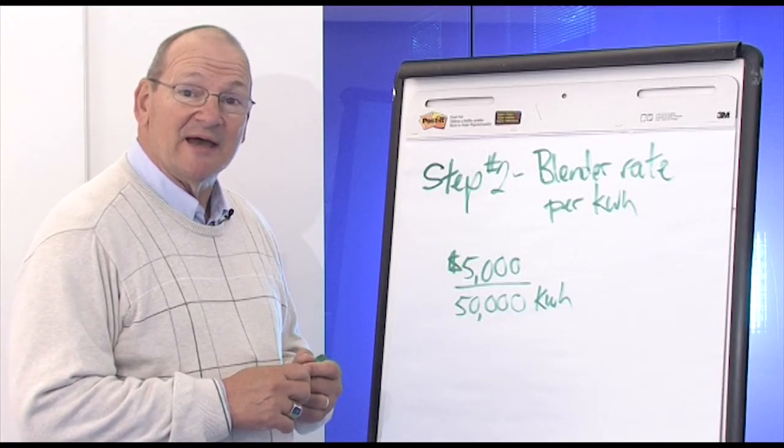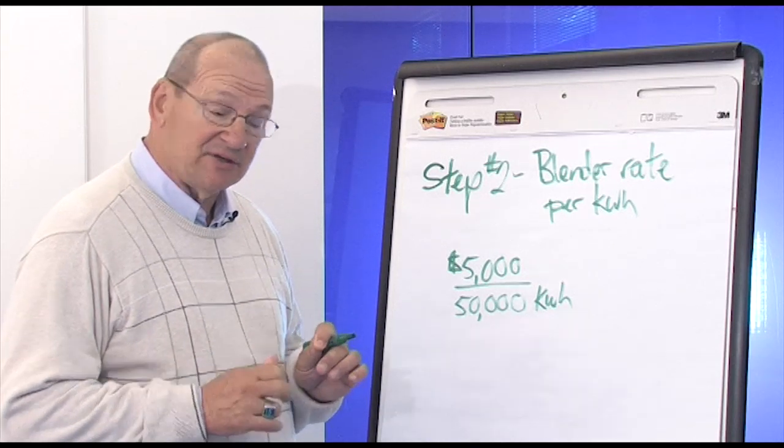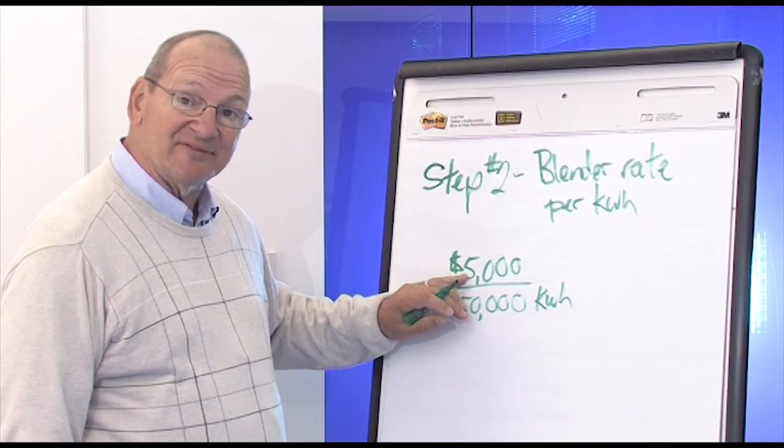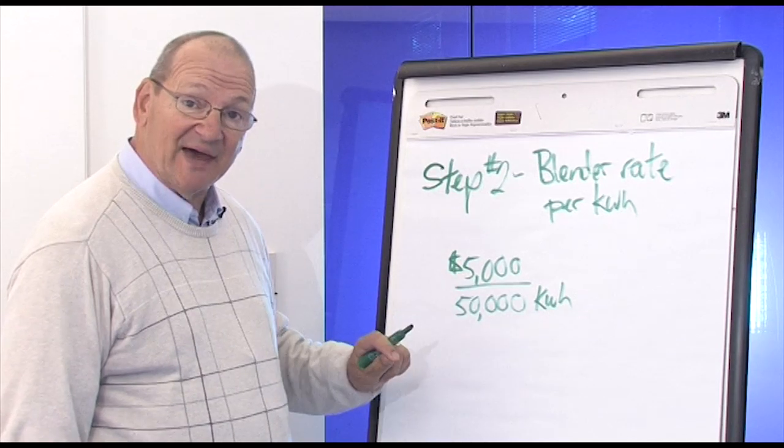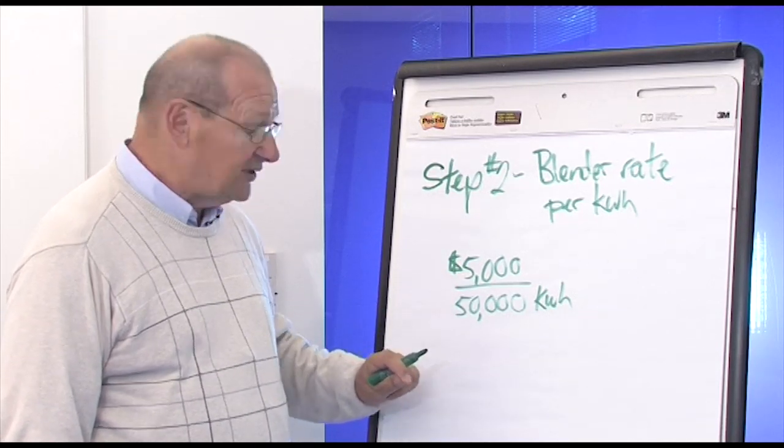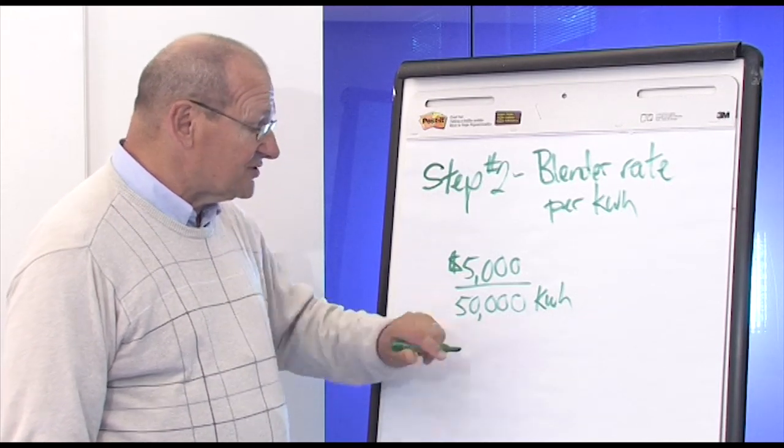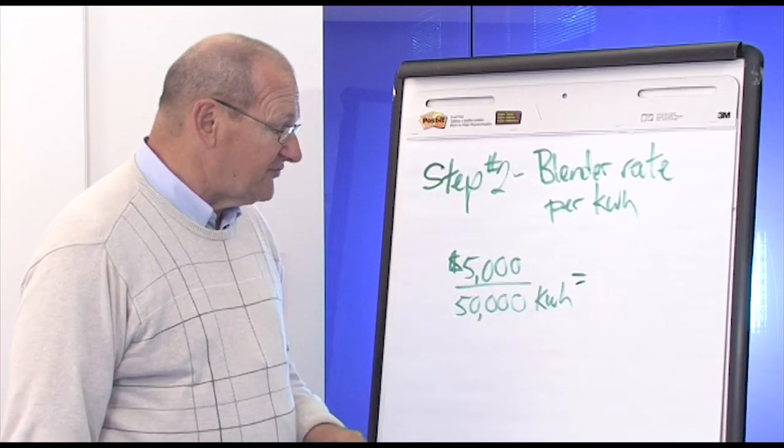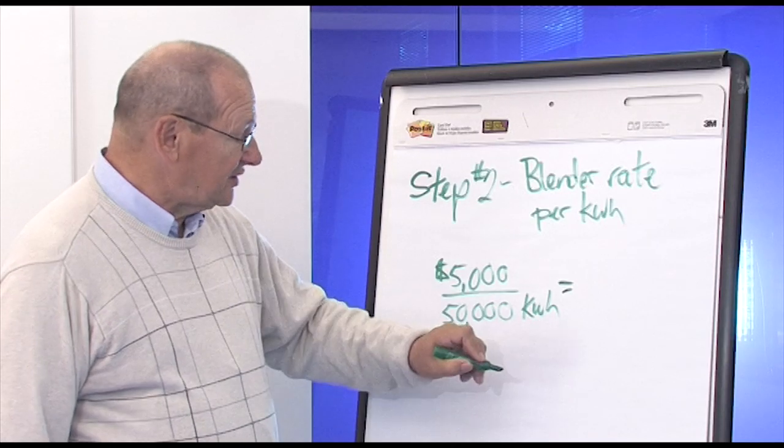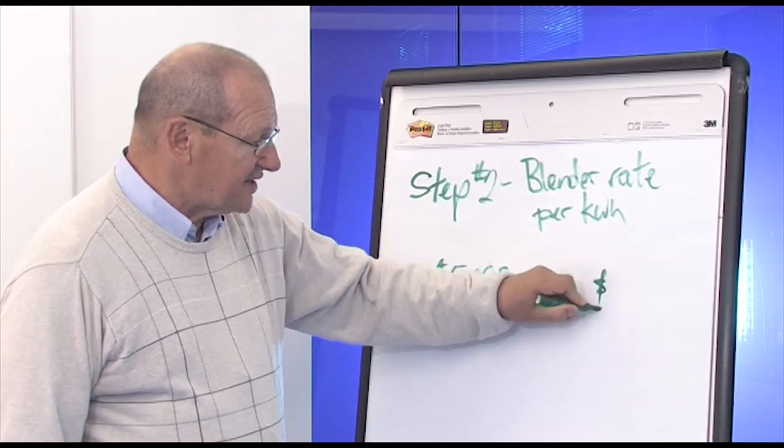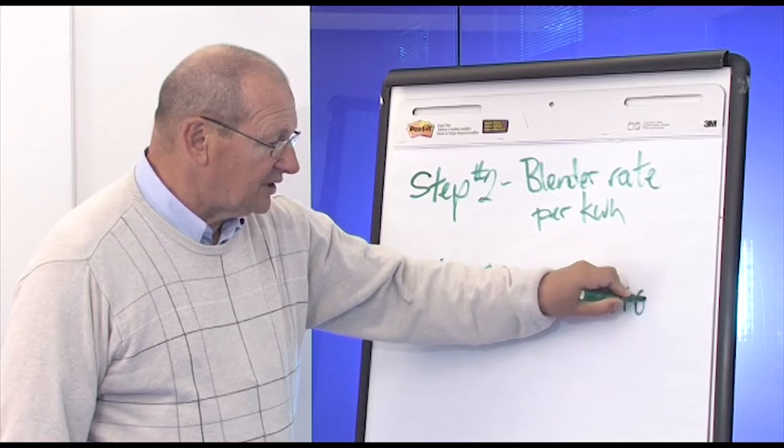Step two. Take the dollar amount on the monthly utility bill. Let's say that's $5,000. And divide that by the number of kilowatt hours on the bill. Let's say 50,000 kilowatt hours. Pause the video. Do the calculation. Now, the result is 10 cents per kilowatt hour.